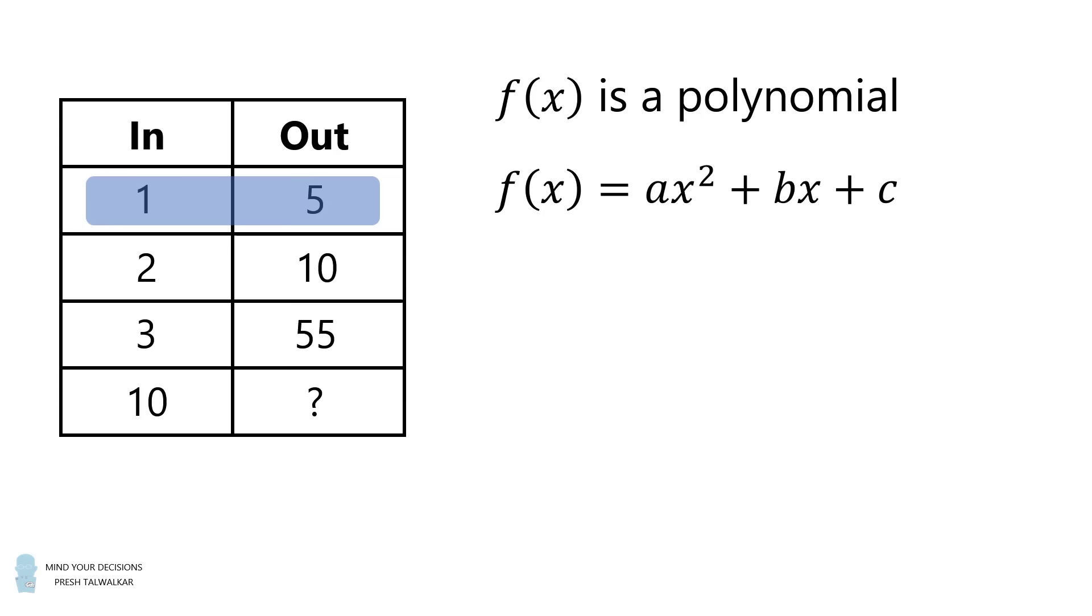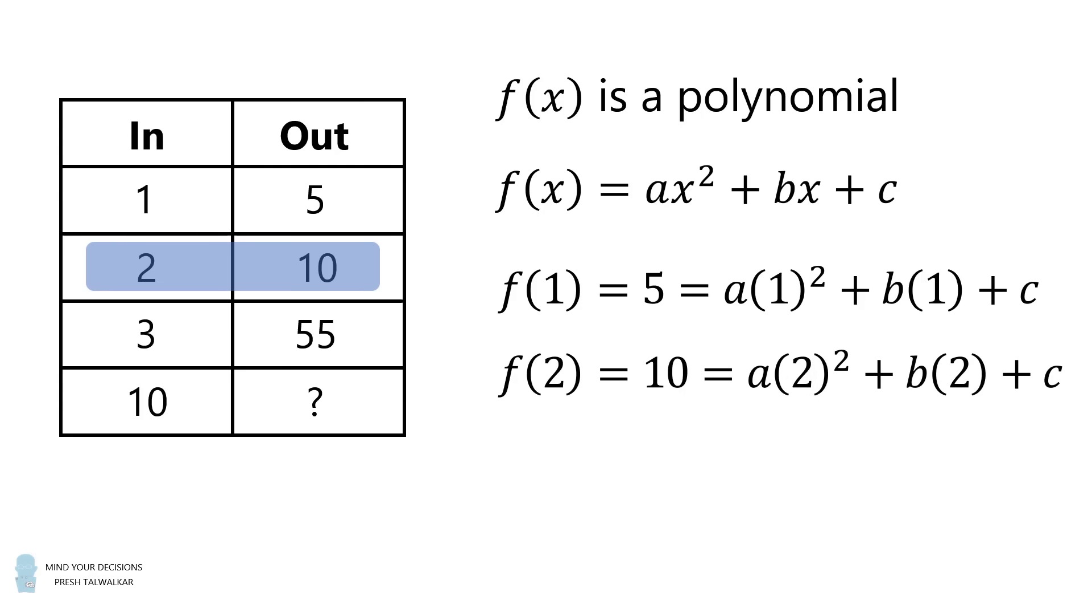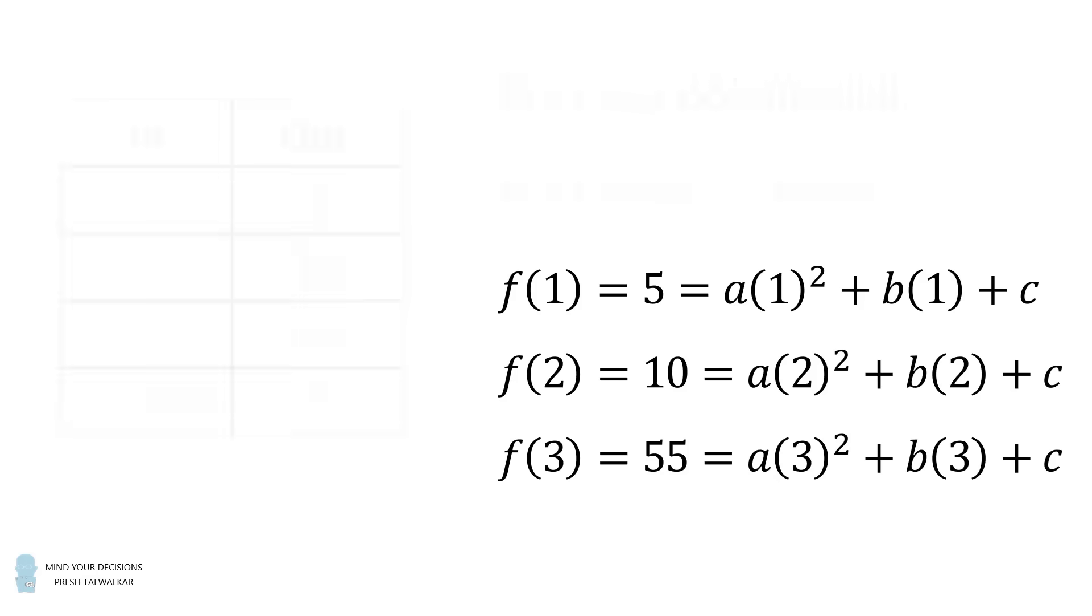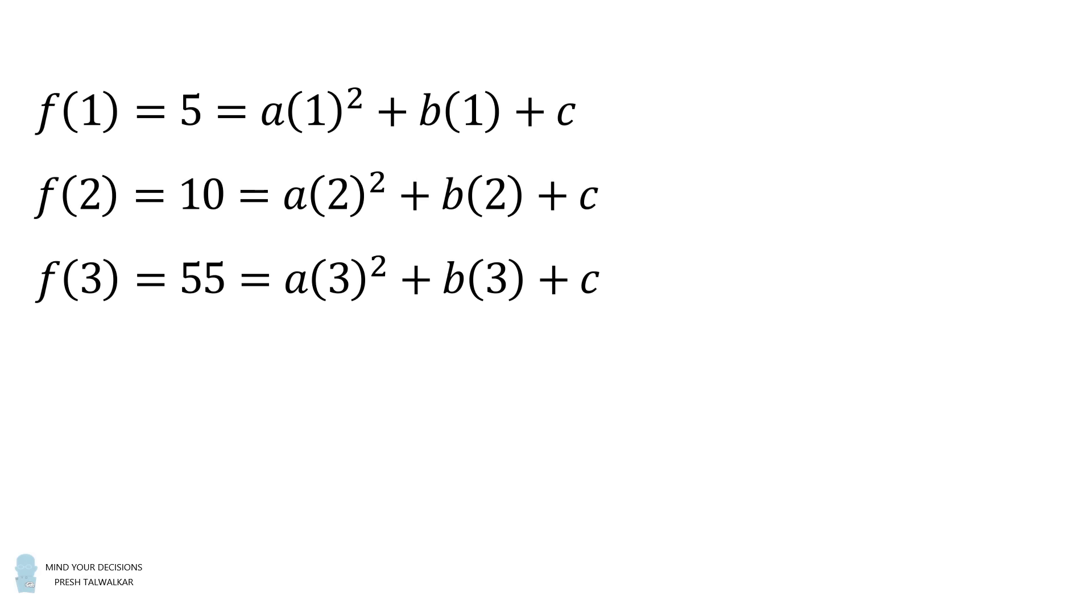f(1) is equal to 5. So we substitute that in: f(1) = 5 = a(1)² + b(1) + c. We'll then substitute for f(2): f(2) = 10, and we'll substitute that x is equal to 2. We'll do the same thing for f(3). We now have a system of three equations. Let's simplify each of these equations. f(1) = 5 = a + b + c. f(2) = 10 = 4a + 2b + c. f(3) = 55 = 9a + 3b + c.